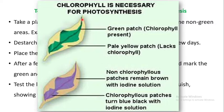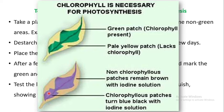When we perform the iodine test on the variegated leaf, the green patches — where chlorophyll was present — turn blue-black, whereas the yellow or white parts do not turn blue-black, showing the absence of food. This clearly demonstrates that only the green parts containing chlorophyll produced starch.